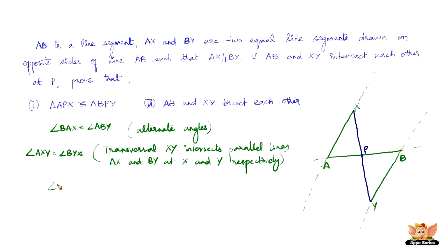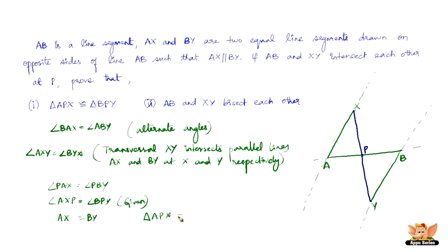Thus in triangles PAX and PBY, we have angle PAX equal to angle PBY, which is given, and angle AXP equal to angle BYP, which is also given. And AX equals BY, which is given since AX and BY are the two equal line segments. So by the ASA congruence criterion — two angles equal and one side equal — triangle APX is congruent to triangle BPY.